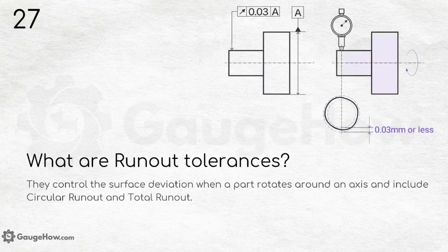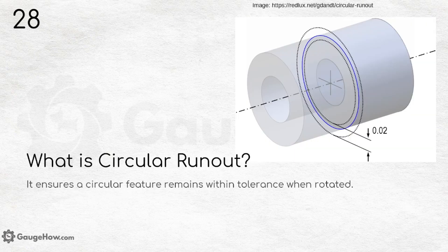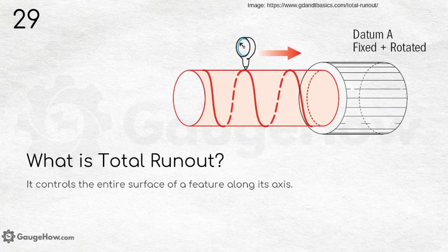What are run-out tolerances? They control the surface deviation when a part rotates around an axis and include circular run-out and total run-out. What is circular run-out? It ensures a circular feature remains within tolerance when rotated — whether 360 degrees or partially. What is total run-out? It controls the entire surface of a feature along its axis.